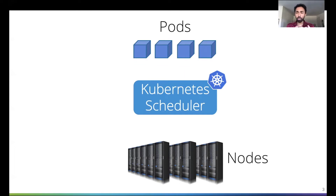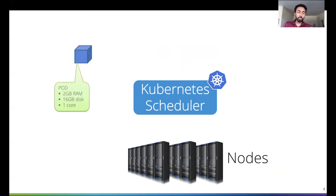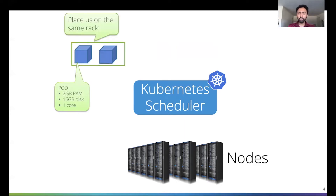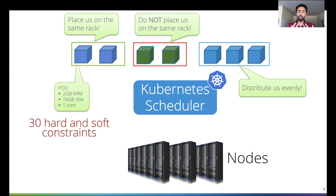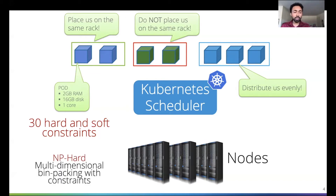The goal of the scheduler is to take pods and assign them to nodes. Pods are containers, nodes are physical or virtual machines. These pods come with various kinds of requirements, like CPU and memory requirements, affinity constraints, anti-affinity constraints, and even soft constraints like load balancing needs. In total, the scheduler supports some 30 different hard and soft constraints. Its goal is to ingest all of this information about the cluster and find high quality assignments of pods to nodes such that all these constraints are satisfied. What we're dealing with here is an example of a multi-dimensional bin packing problem with constraints, which is a known NP-hard problem.